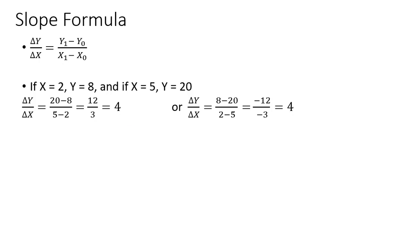We could also reverse these subscripts and it won't matter. We could say y equals 8 is y-subscript-1 and y equals 20 is y-subscript-0, giving 8 minus 20 equals minus 12 in the numerator. Similarly, x equals 2 is x-subscript-1 and x equals 5 is x-subscript-0, giving minus 3. We still get the same answer. Don't be concerned about which one is subscript-1 or subscript-0 — just pick one and be consistent.